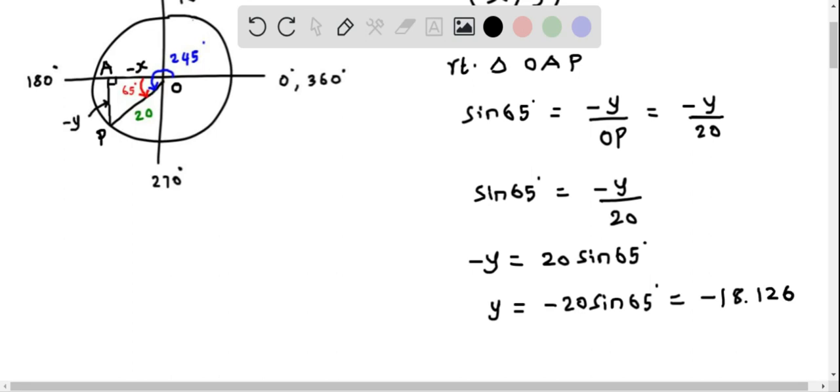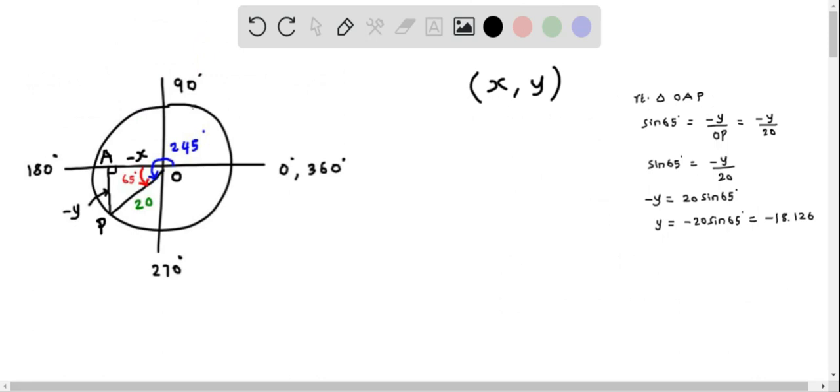We now find the cosine of 65 degrees to determine the value of X. I am going to write cos 65 and this equals, according to SOHCAHTOA, the adjacent side to 65 degrees, that is negative X divided by the hypotenuse which is OP. OP is 20 so I substitute 20 here.